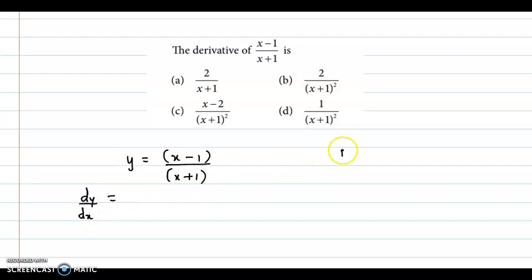the quotient rule is: denominator into derivative of numerator minus numerator into derivative of denominator upon denominator square.